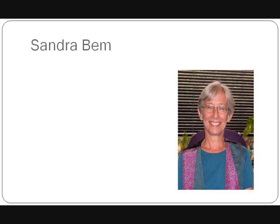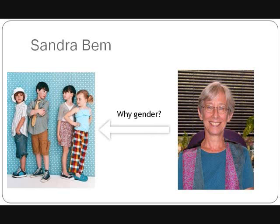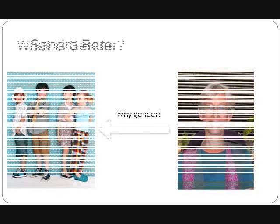In the 1970s, Bem began to question the cognitive development theories of Jean Piaget and Laurence Colbert. She felt they neglected to answer why gender was so important to young children, especially in terms of their socialization. Bem wanted to know why children organized themselves based on their gender, rather than other identifying characteristics, such as their race or religion. She argued that gender was not naturally more important to children, and wanted to know what caused this behavior.